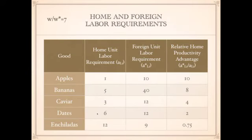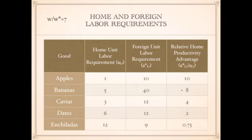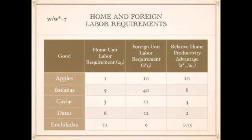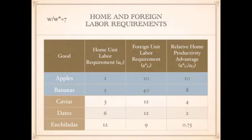Let's do this again with a different wage rate ratio — home to foreign equal to 7. Using the same rule, if the relative home productivity advantage is greater than the wage rate ratio, production occurs at home. Moving down the list: 10 is greater than 7, so apples are produced at home. 8 is greater than 7, so bananas are also produced at home. After that the rule no longer holds, so caviar, dates, and enchiladas will all be produced in the foreign country.